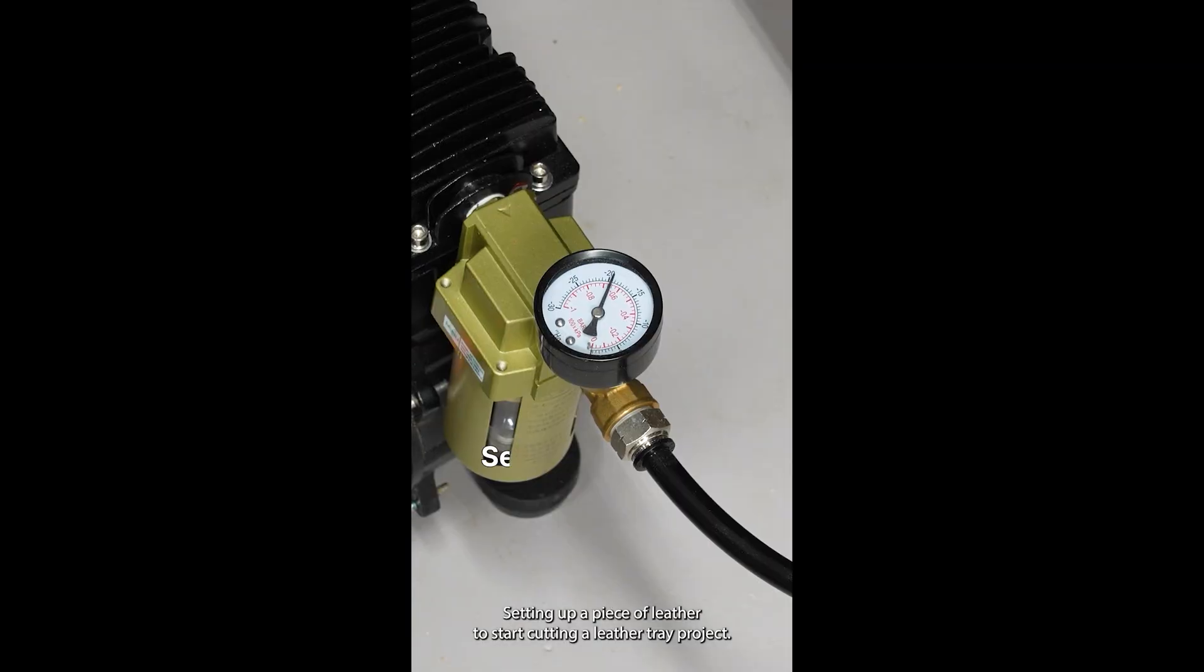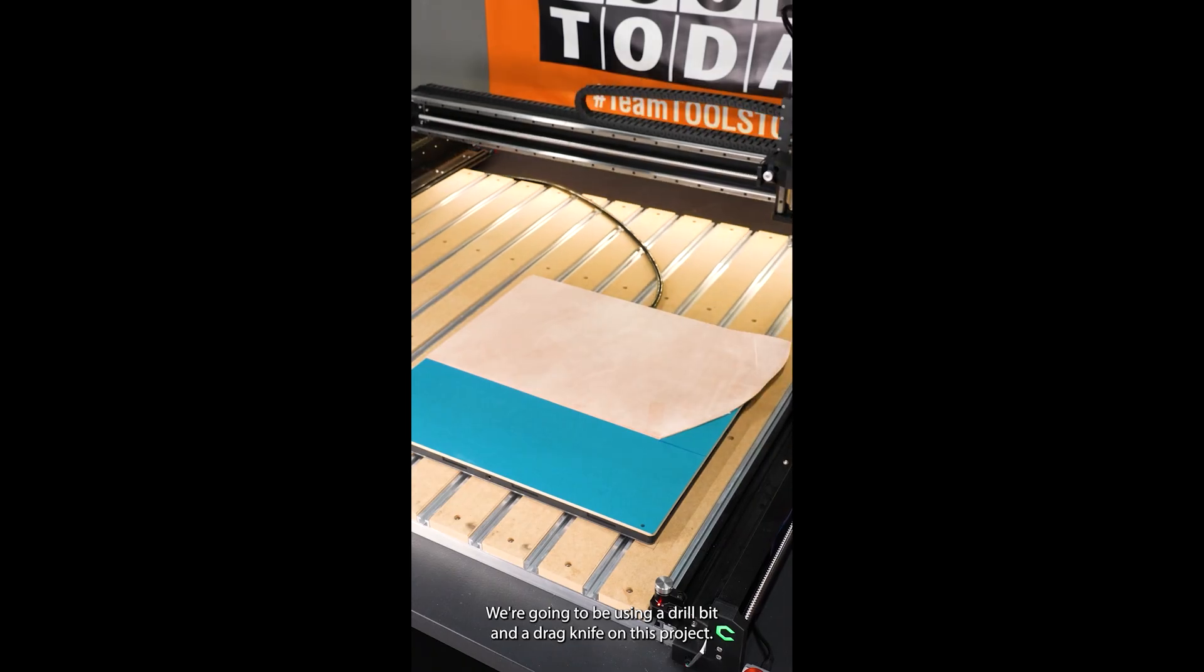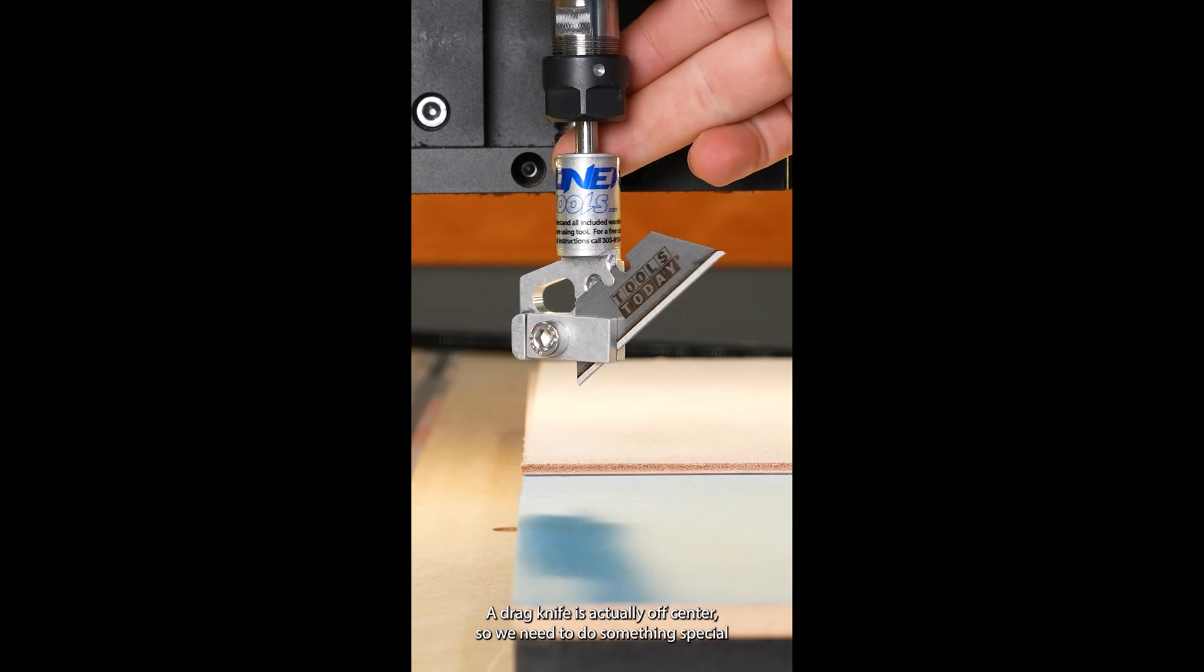Setting up a piece of leather to start cutting a leather tray project. We're going to be using a drill bit and a drag knife on this project. A drag knife is actually off-center, so we need to do something special.